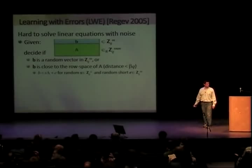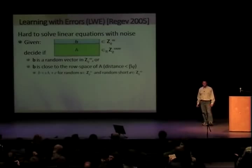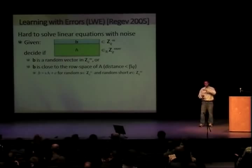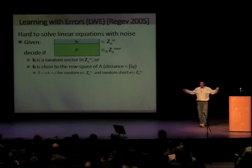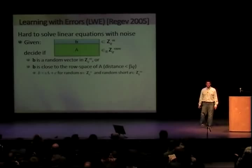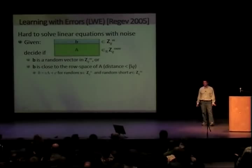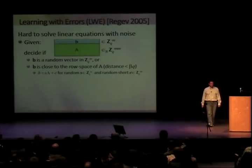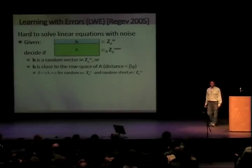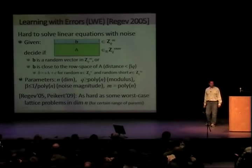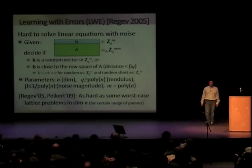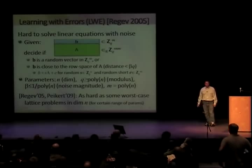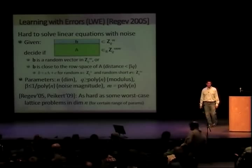The formulation I'll work with here is the following. You are given a matrix A and another vector B. The matrix A is short and wide, and the vector B is the wide thing. Your goal is to decide whether the vector B is also just a random vector independent of everything else, or whether it is close to the row space of A — meaning it was obtained as some linear combination of the rows of A plus a little bit of error. There are several parameters: N is the dimension, the number of rows in the matrix, and Q is the modulus, so all equations are happening mod Q.